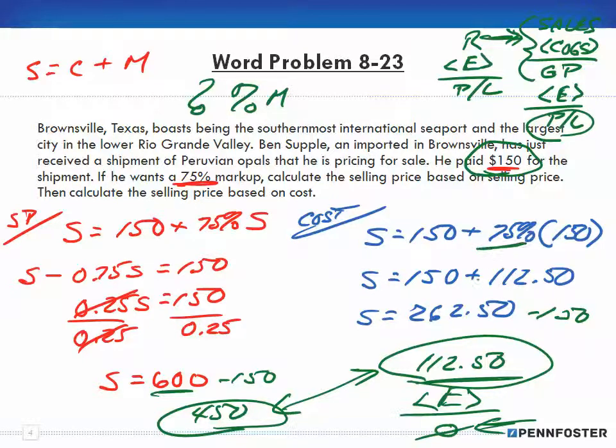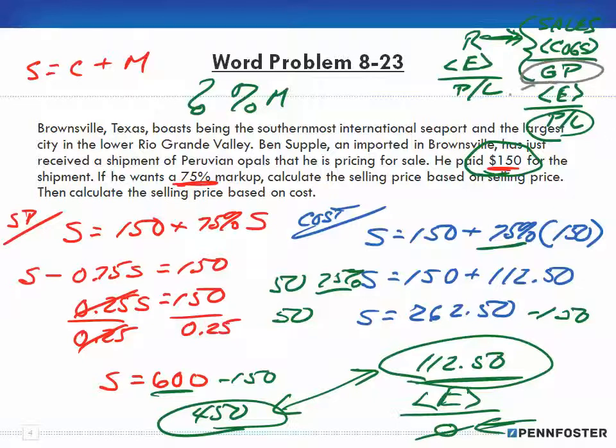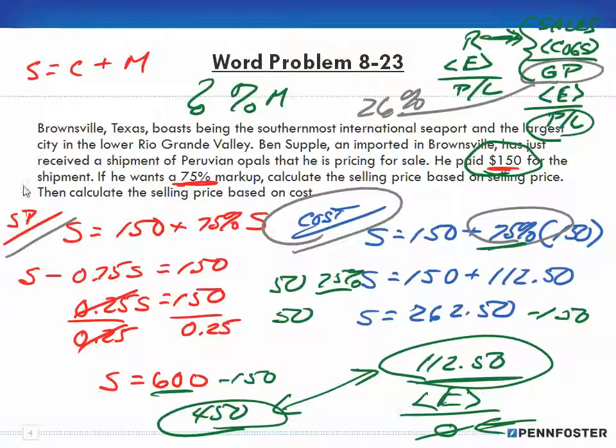So the whole idea behind doing these calculations, it gives you a range with which to think about. It's not a set in stone number, but if you don't have this thought process, then you're just guessing. And that's the reason why you go through all of this and why you have, you look at marking up on the selling price versus marking up on the cost. All right. So with that said, I'm finished and I'll see you in the next video.